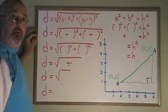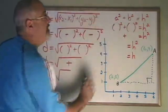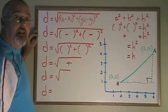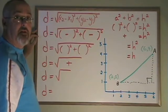The distance formula is derived from Pythagorean theorem, which I have up here. Pythagorean theorem is used to find the length of a side in a right triangle when you know the lengths of the other two sides.